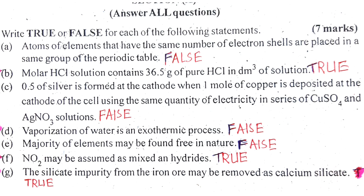Number B: A molar HCl solution contains 36.5 grams of pure HCl in one dm³ of solution. This is true — a molar HCl solution contains 36.5 grams of pure HCl in one dm³ of solution.